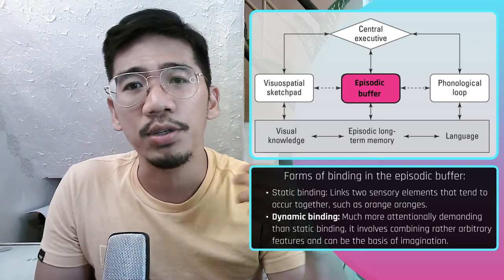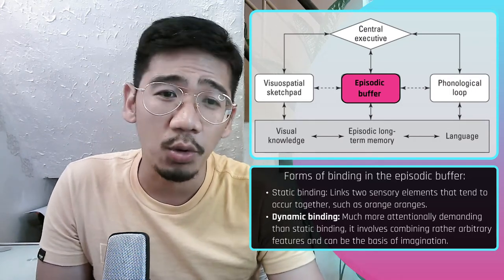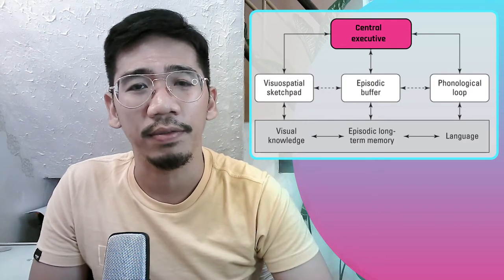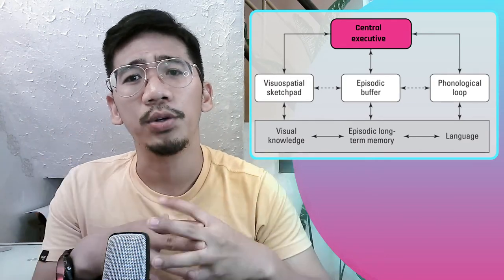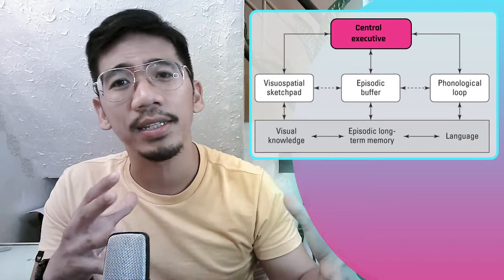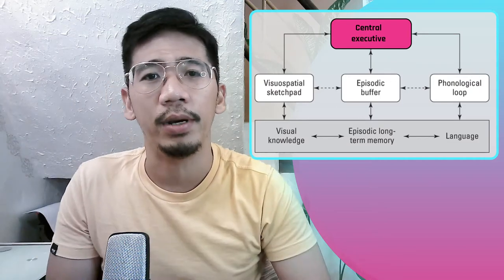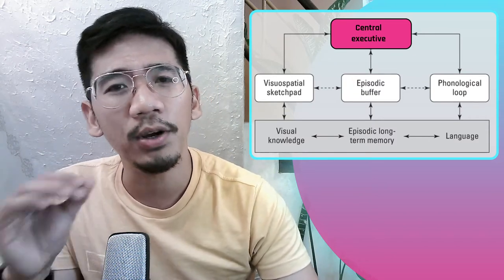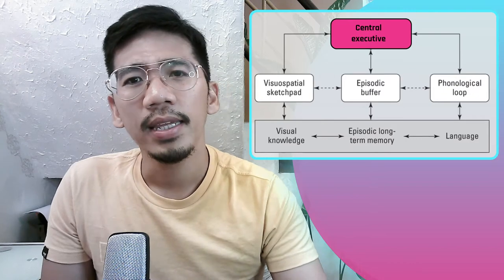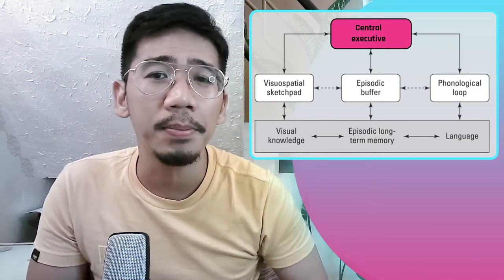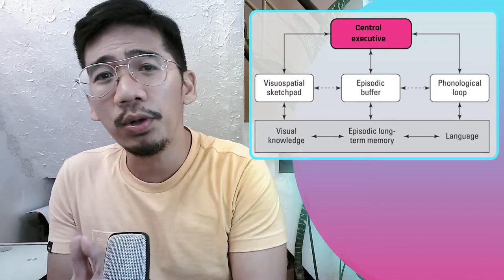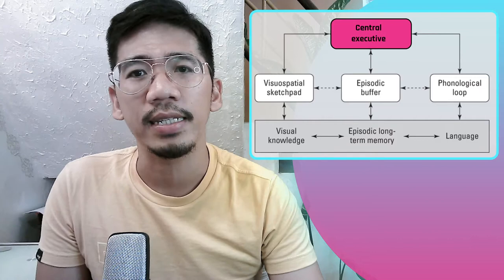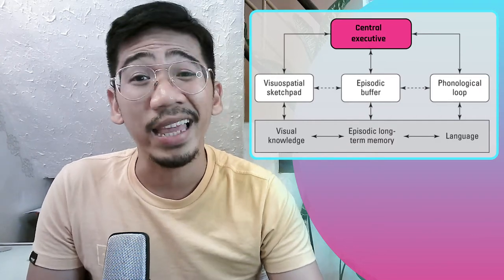Given that the episodic buffer links all the other components of working memory, it processes all different senses and has a limited storage capacity. It can combine or bind across senses as well as within senses, and also binds new information to information stored in long-term memory. Lastly, the central executive is the central processor of working memory — the control unit that guides each of the other parts of working memory and is considered the driving force for attention. Like a computer's central processor, it has a limited capacity and its functions are called executive functions.